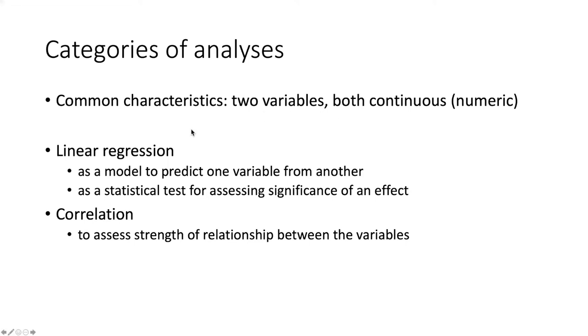One of those analyses is linear regression, and we can use linear regression in two different ways. We can use it as a model to predict the value of one variable from another, but we can also use it as a statistical test for assessing whether a particular effect is significant or not. Correlation is used to assess the strength of relationship between two variables. We do not make any assumptions about cause and effect with correlation.